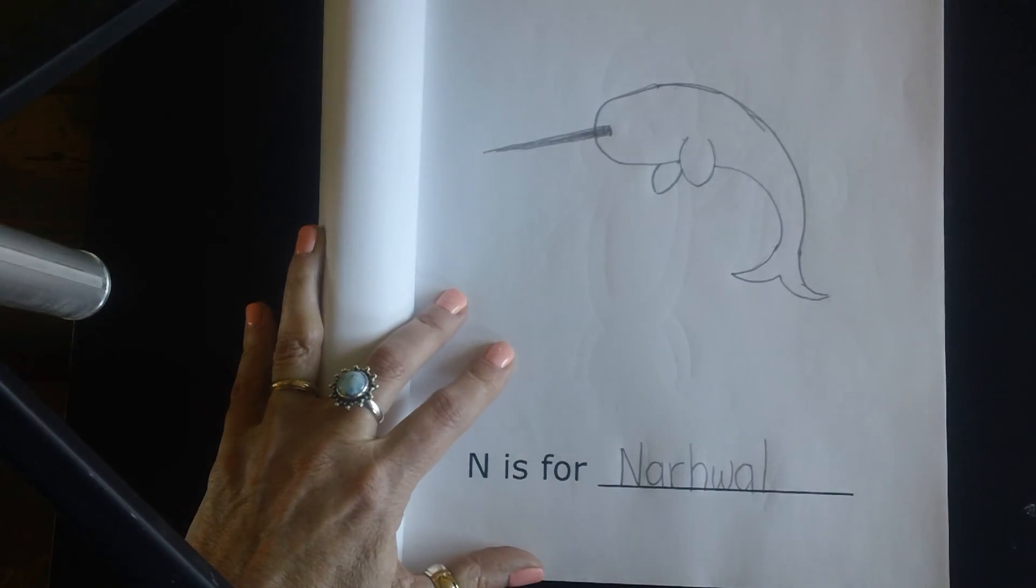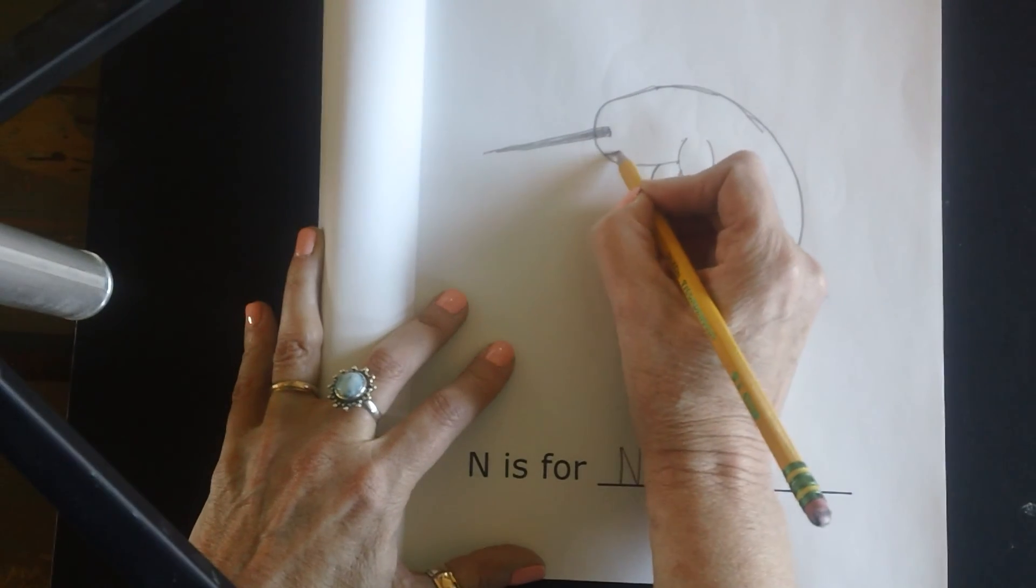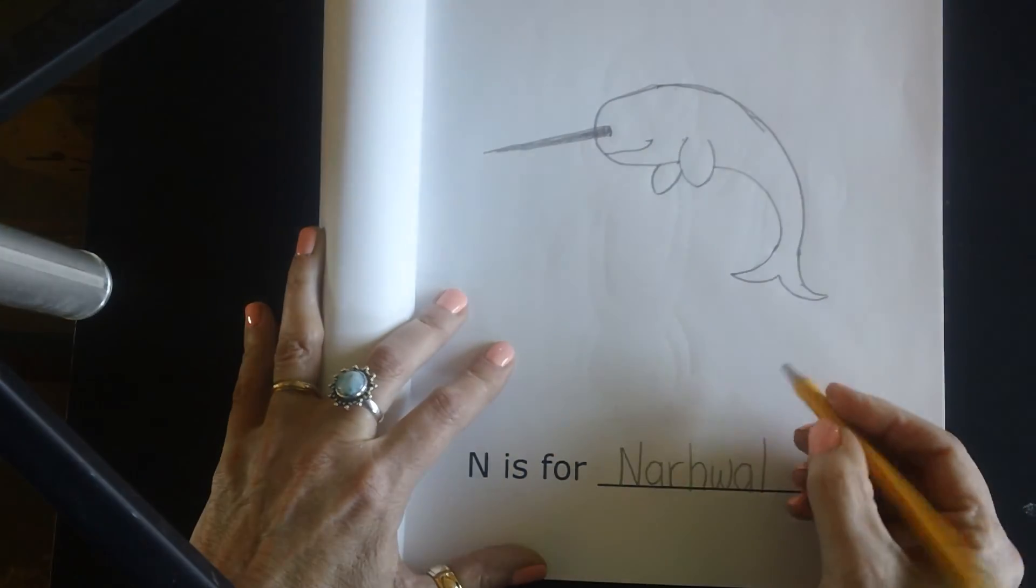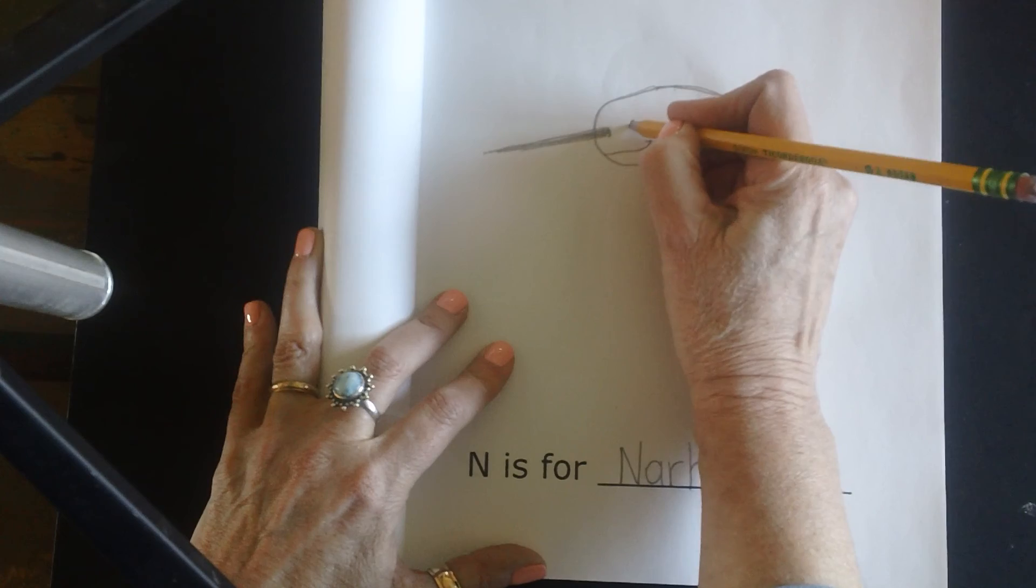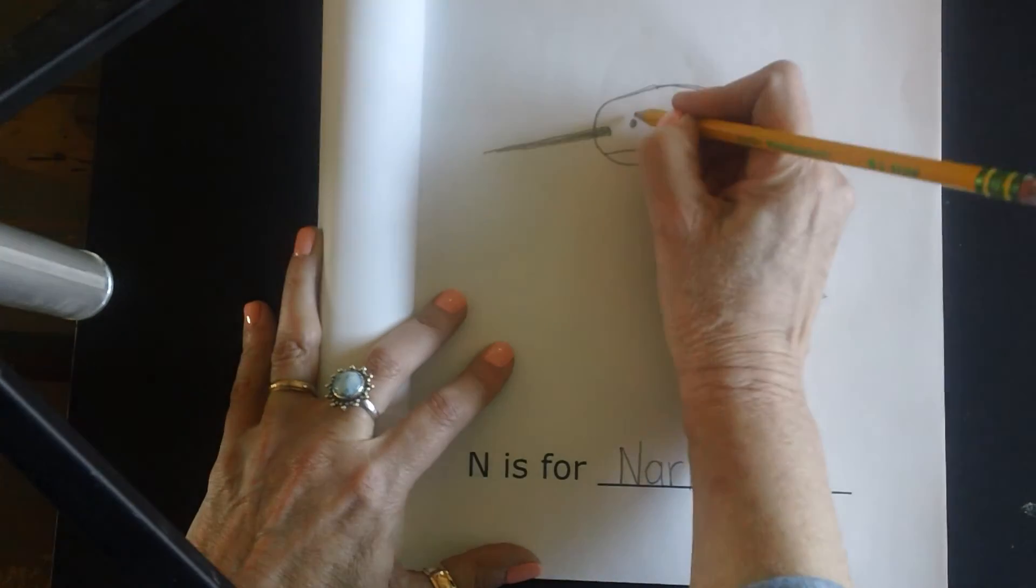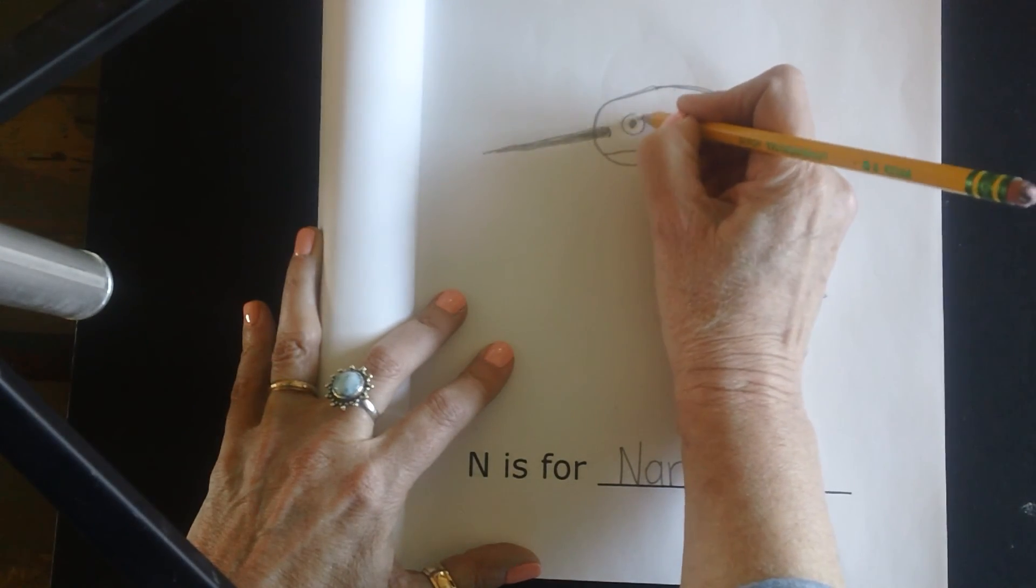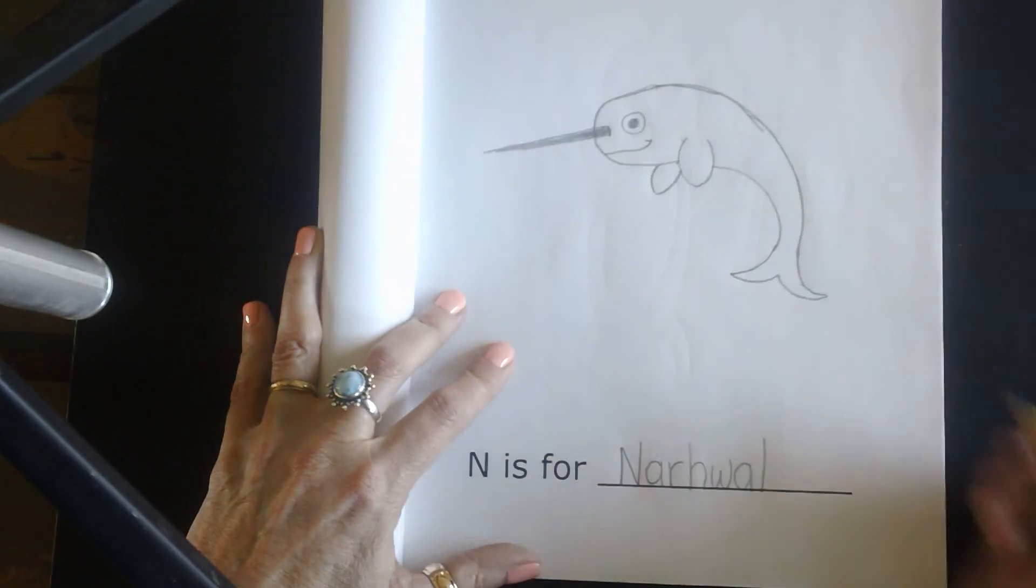All right, almost done. We're going to give him a nice smile. He's a happy narwhal and a little eye. Now you can leave it a little eye or if you want a bigger one we can just make a bigger circle around it like that.